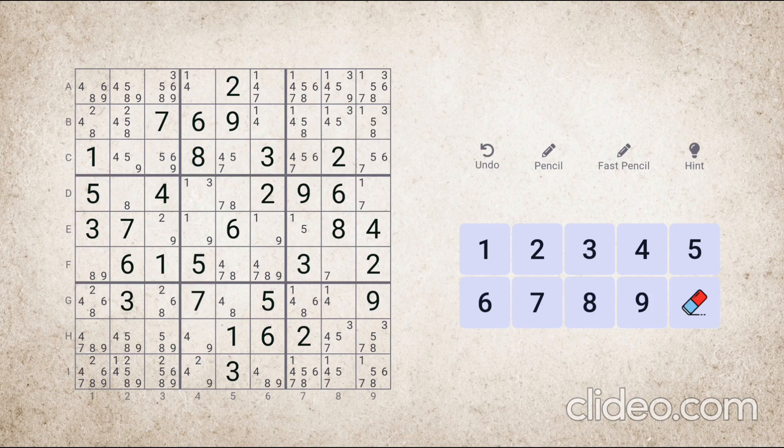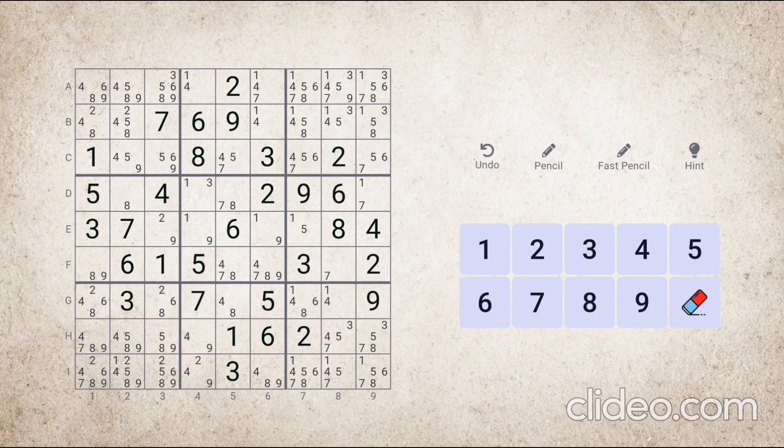So the definition says that if in a row or column, all the possible nodes for a number are present in only one block, then in that block, the number cannot be placed in any cells that are not part of that row or column.